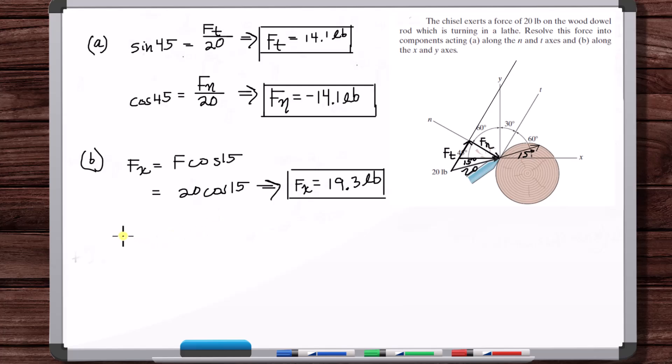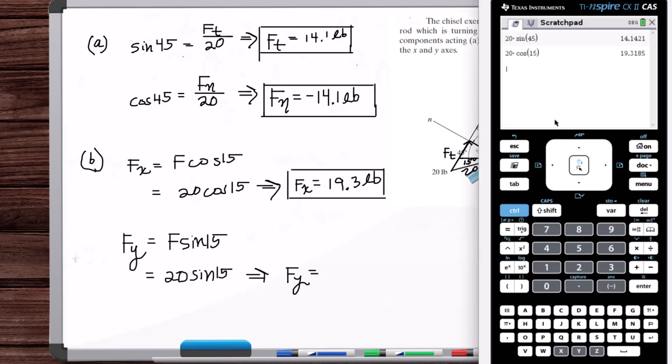All right, now F_y is equal to F sine of 15. That's also going to be positive. So we've got 5.18 pounds.